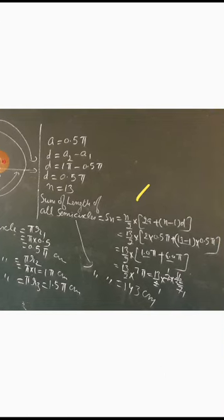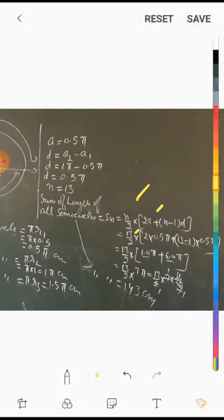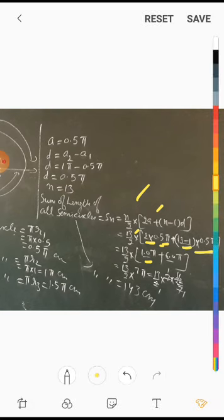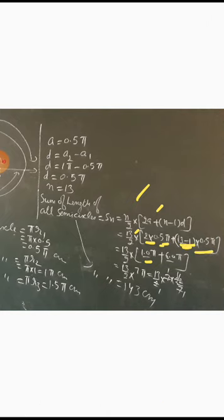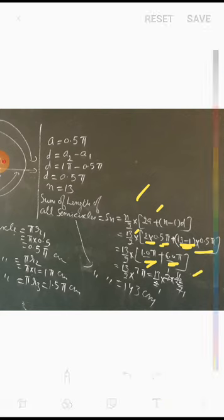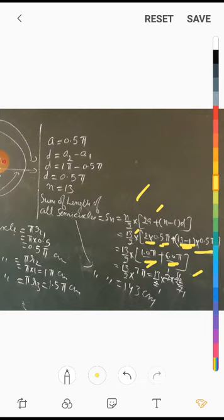Using S_n = n/2 × [2a + (n-1)d]: S_13 = 13/2 × [2×0.5π + 12×0.5π] = 13/2 × [π + 6π] = 13/2 × 7π. Substituting π = 22/7: 13/2 × 7×22/7 = 13/2 × 22 = 13 × 11 = 143 cm. The total length of all semi-circles is 143 cm.